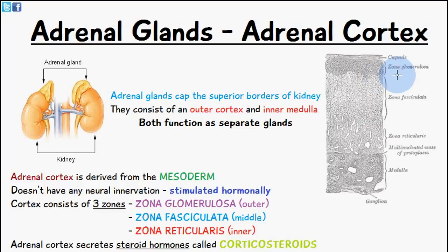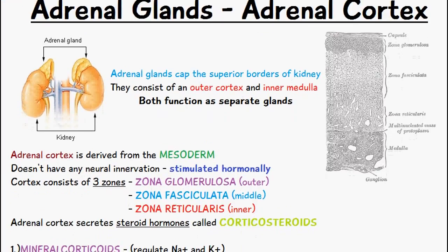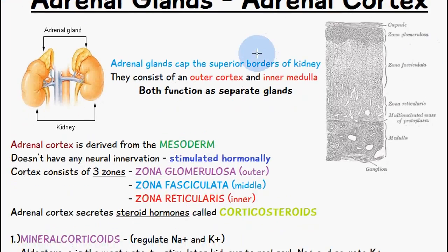The three layers are: zona glomerulosa, zona fasciculata, and zona reticularis. Underneath those we have the adrenal medulla, which we'll cover in the next video. The adrenal cortex is derived from the mesoderm.